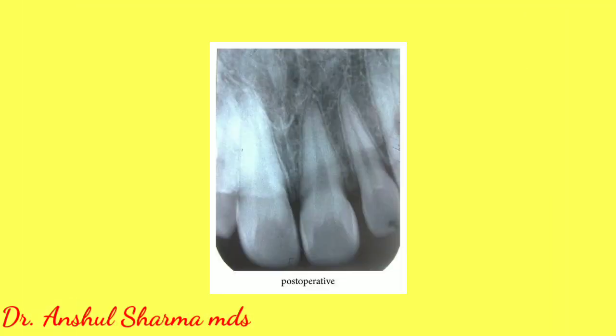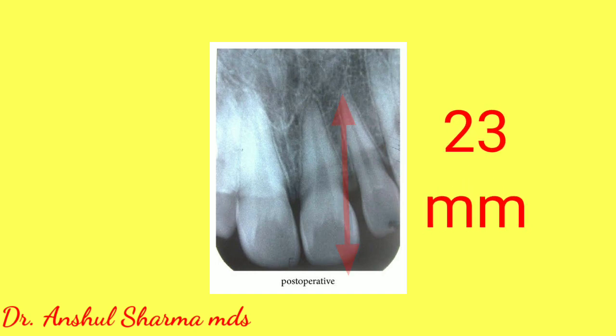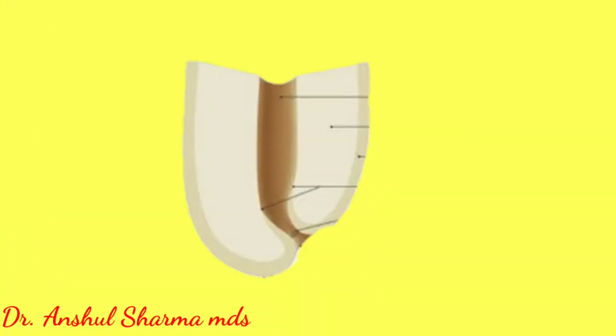The first step in Ingalls radiographic technique is to take a radiograph of the tooth which has to undergo root canal treatment. For example, we have taken a radiograph of a central incisor whose radiographic length is almost 23 millimeters. Since the apical constriction is 0.5 to 1 millimeter away from the anatomical apex, we reduce the estimated working length by about 1 millimeter, giving approximately 22 millimeters.